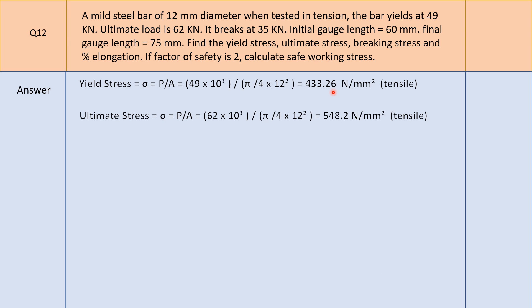For ultimate stress, the formula is again sigma equals P upon A, but now P is the ultimate load of 62 kN. So substitute P as 62 into 10³ divided by pi by 4 into 12 squared. Calculating: (62e3) / (π/4 × 12²) gives 548.2 N/mm², and this ultimate stress is also tensile.